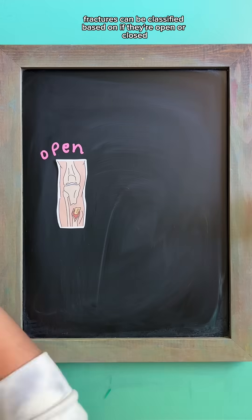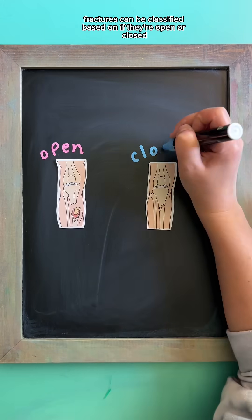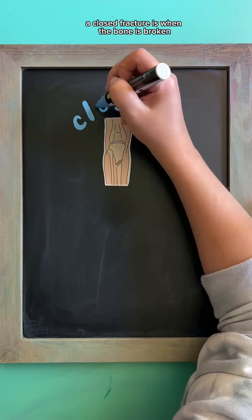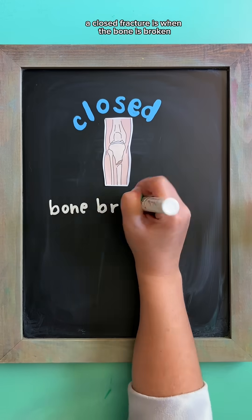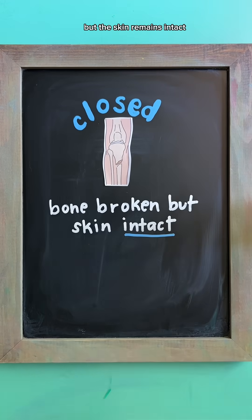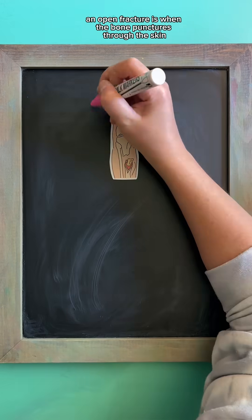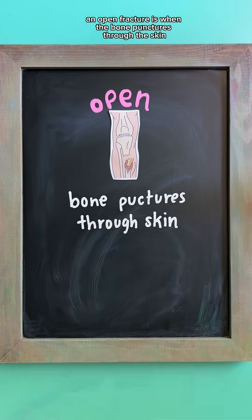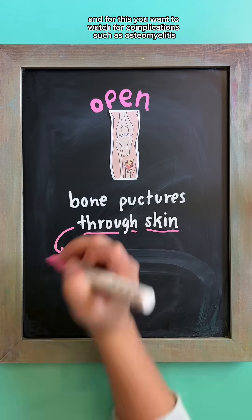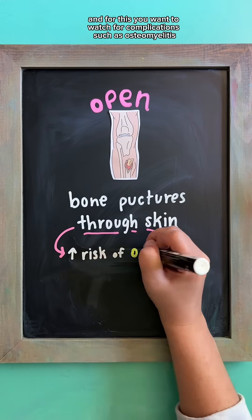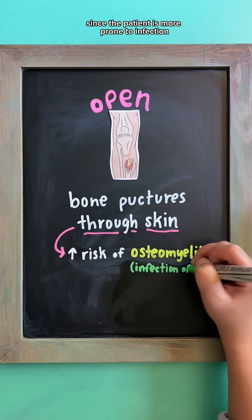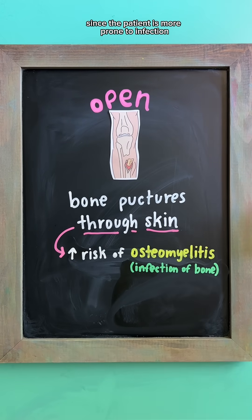Fractures can be classified based on if they're open or closed. A closed fracture is when the bone is broken but the skin remains intact. An open fracture is when the bone punctures through the skin, and for this you want to watch for complications such as osteomyelitis, since the patient is more prone to infection.